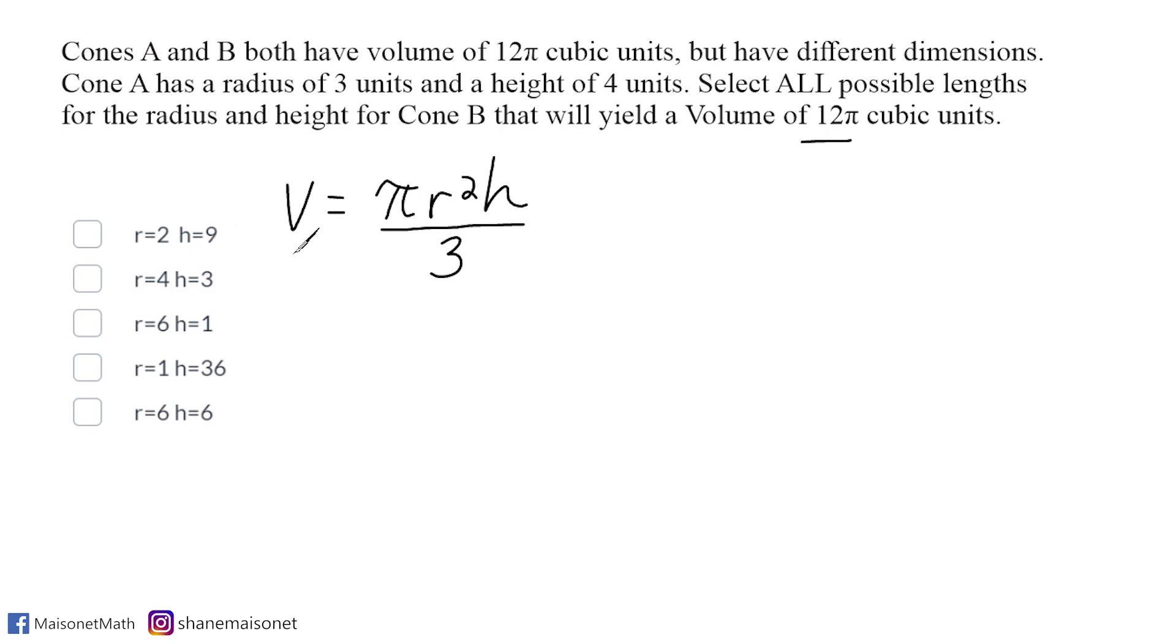Let's take the first pair of numbers. We're going to substitute a radius of 2 and square it, then multiply it by a height of 9 and divide by 3. We can take 9 divided by 3 to begin with and reduce that to 3 over 1. Then we take 2 squared, which is 4, and multiply 4 times 3, which is 12. So this combination of radius and height does give us a volume of 12π. This is what we should select.